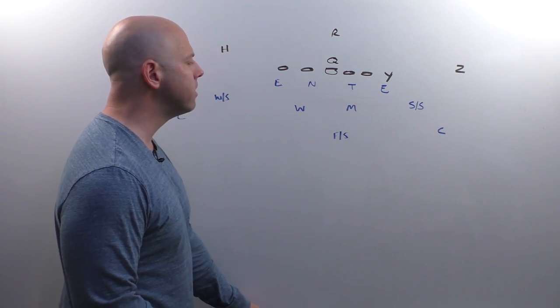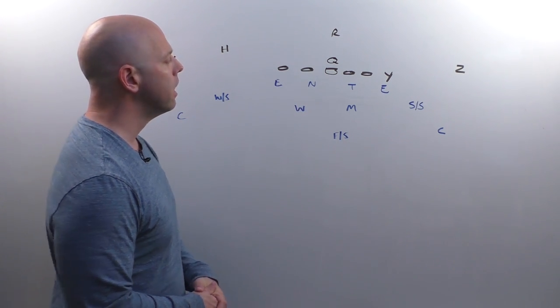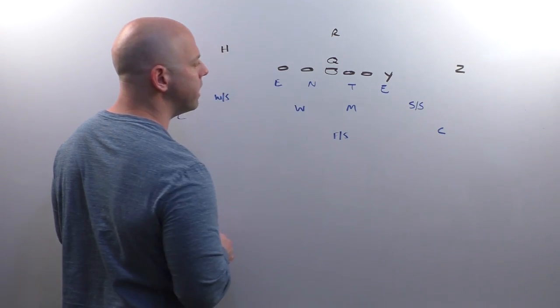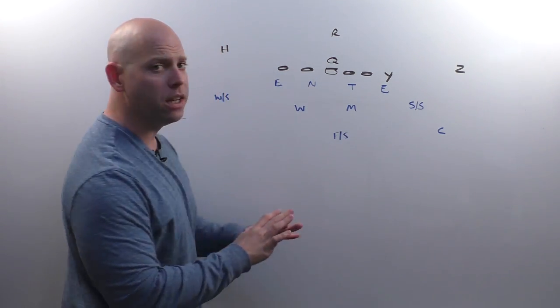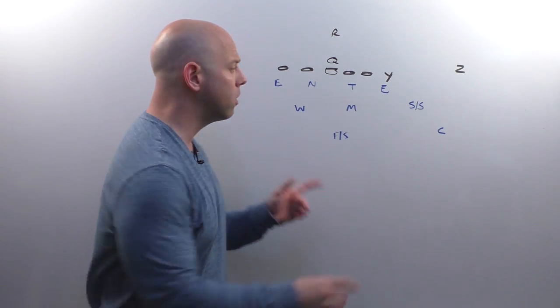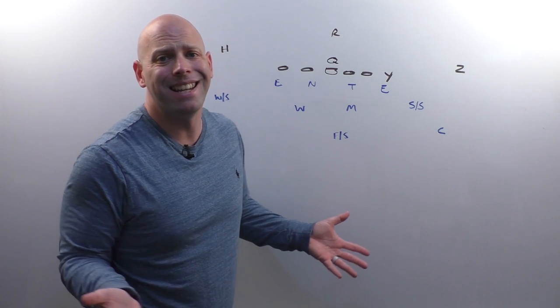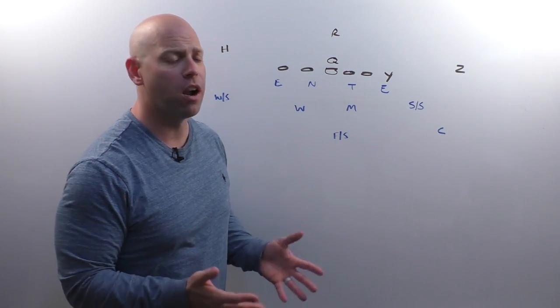We're going to be looking at this from the 4-2-5 defense where we have our two corners, our free safety, our weak safety, strong safety. If you want to make this into a 4-4 defense, call these guys outside linebackers. It's not any different. We're running a cover three.